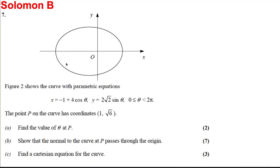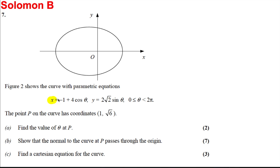Here's a Solomon question where we've got a picture of the curve — it looks like an ellipse. The parametric equations are x = -1 + 4cosθ and y = 2√2 sinθ, where 0 ≤ θ < 2π. The point P on the curve has coordinates (1, √6), so let's draw in where P is. It says find the value of θ at P.